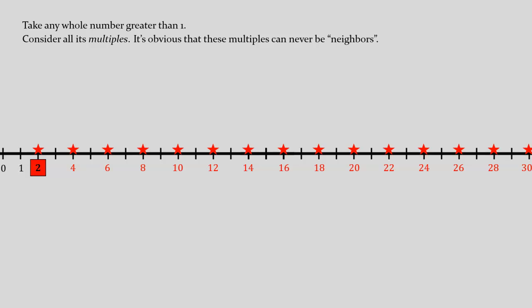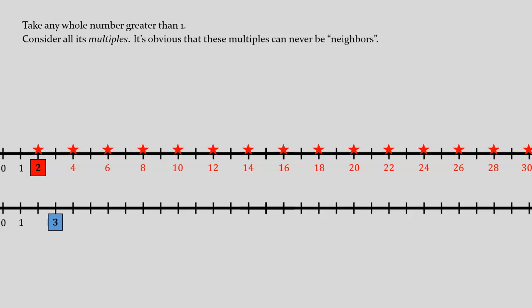For example, in our illustration, 16 and 18 are pretty close to one another, but they're still separated by 17, which isn't a multiple of 2. So, 16 and 18 are not neighbors on the number line. Of course, there's nothing surprising about this, and obviously, this property doesn't depend on our specific choice to look at multiples of 2 for our illustration. After all, if we had looked at multiples of 3 instead, we would have seen the same phenomenon, only more so.